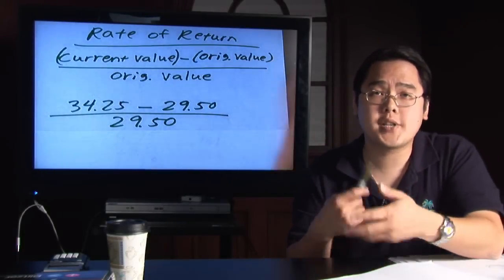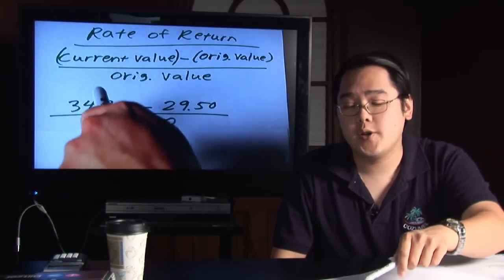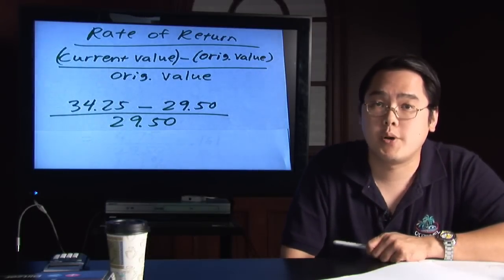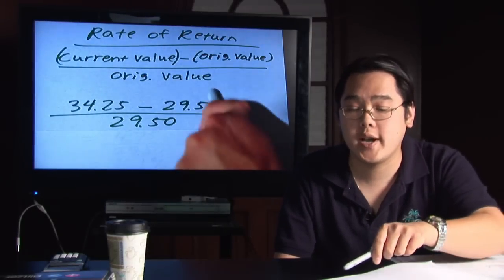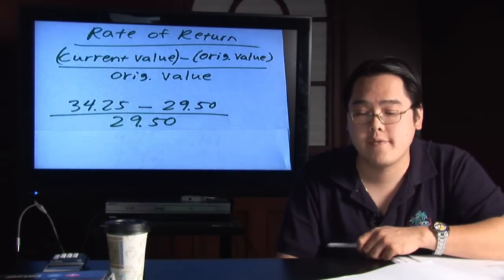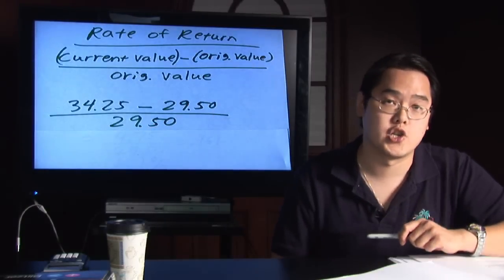Here's a basic illustration as to how this formula is applied. Suppose the value of your stock currently is $34.25, and suppose that you had purchased it at $29.50. What you would do is take the $34.25, subtract it by the $29.50, and then, of course, your denominator is the same as your original value.